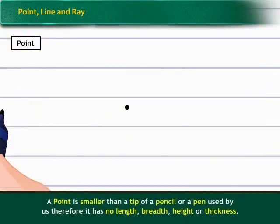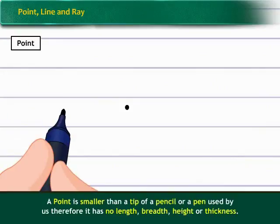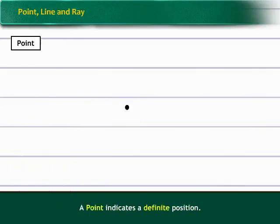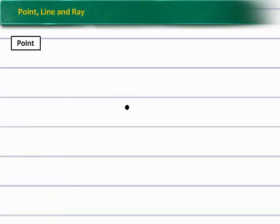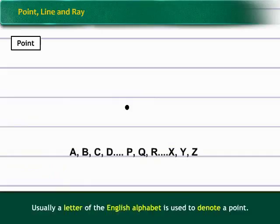A point is smaller than a tip of a pencil or a pen used by us. Therefore it has no length, breadth, height or thickness. A point indicates a definite position. The dot itself is not a point. Usually a letter of the English alphabet is used to denote a point.